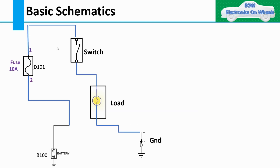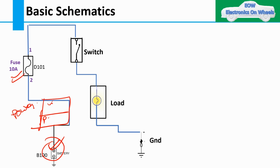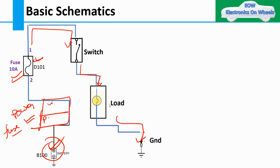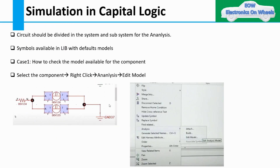Most of the time Capital Sim Stress is used in Capital Logic. Moving to how we use it — I will give you a short glimpse without going into detail. This is a simple circuit: a battery, a power distribution block with primary and secondary fuses, a switch connected to a load, and then grounded. On this basic circuit, I want to do the analysis.